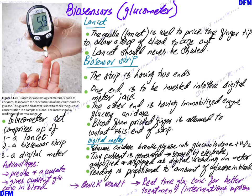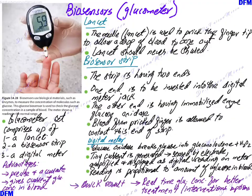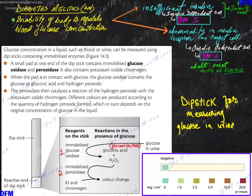Hello students, this is Dr. Fezzan Mirza. We are discussing the condition diabetes mellitus and how biosensors and dipsticks can be used for noting down the level of glucose in urine or blood.